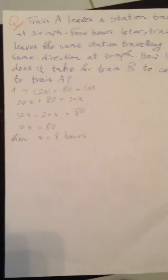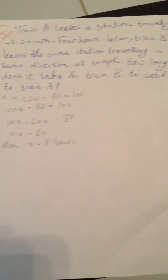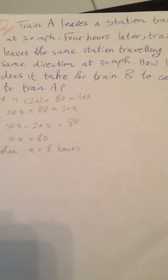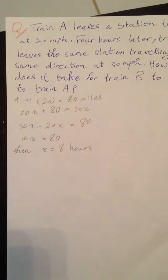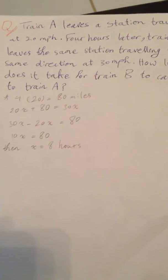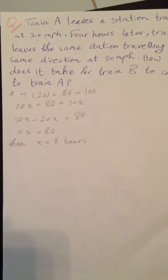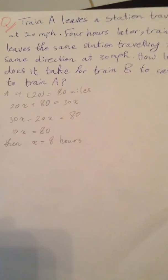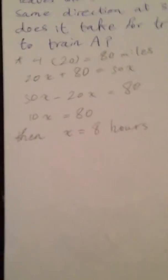So we have this question saying train A leaves a station traveling at 20 miles per hour. Four hours later, train B leaves the same station traveling in the same direction at 30 miles per hour. The question is how long does it take for train B to catch up to train A?